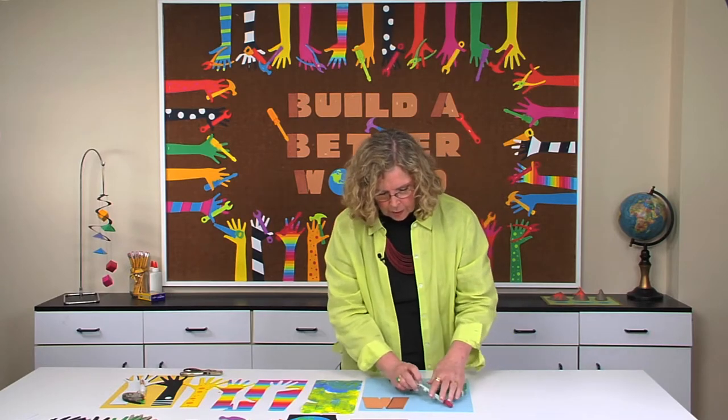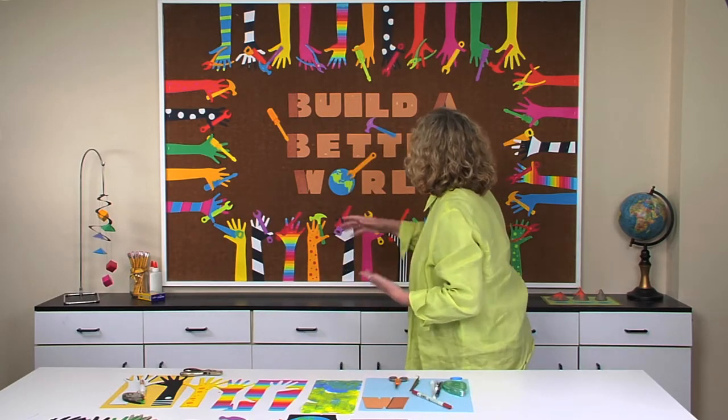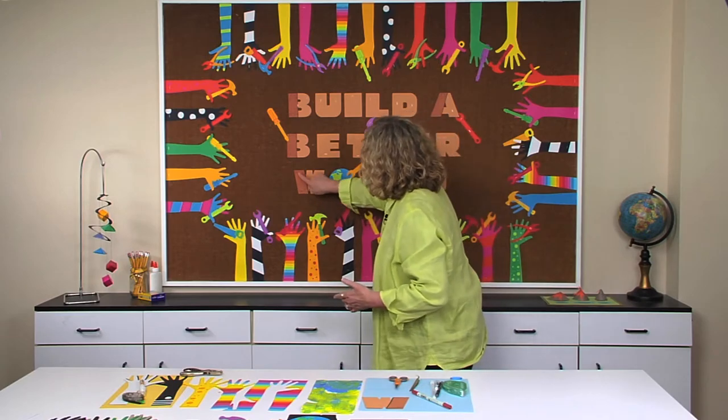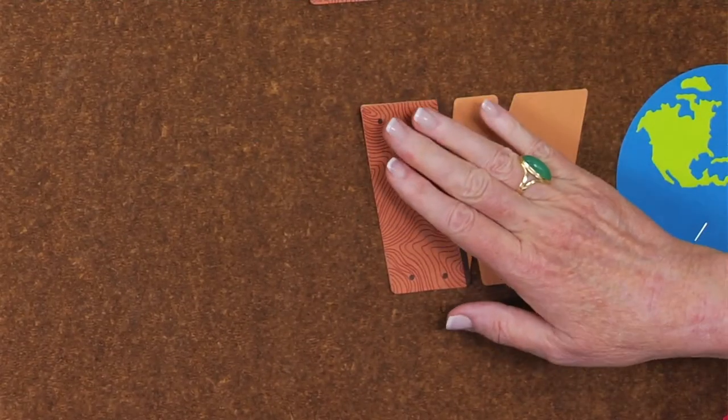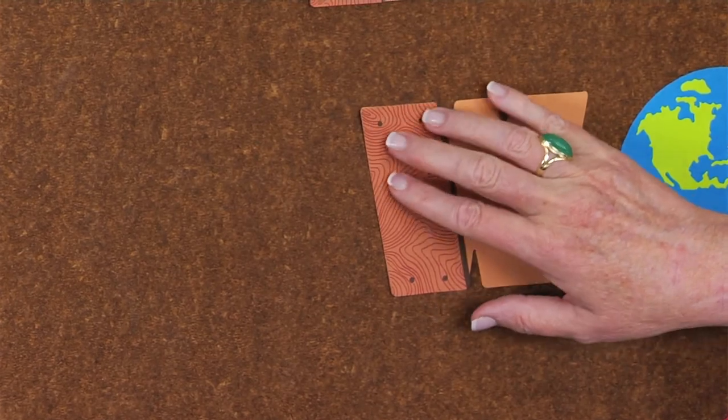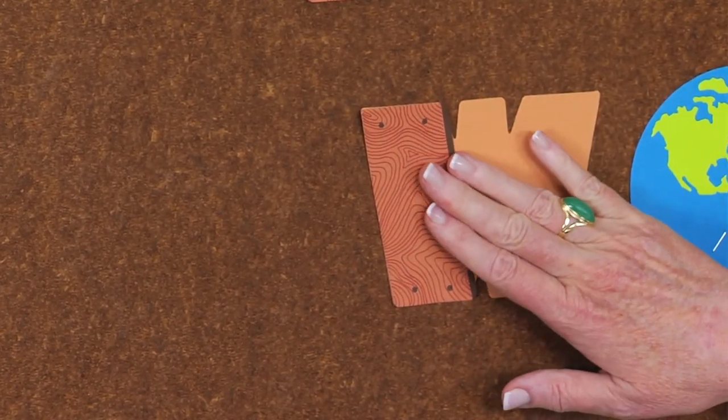And if we go back and we look up on the board, we'll look at that W. You can see when you look closely how the grain is created and it's just one more element for your students to be involved in in order to create each of these letters.